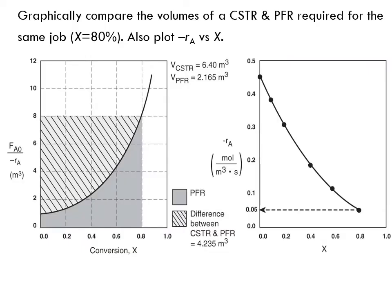So here we go. This is the volume of a CSTR — we're achieving 0.8 conversion — and the volume of the plug-flow reactor is represented by this area. This area shows the difference between these two volumes. Obviously, the volume of a plug-flow reactor is much smaller than the required volume for a CSTR to do the same job.